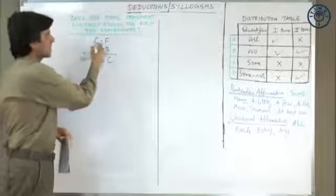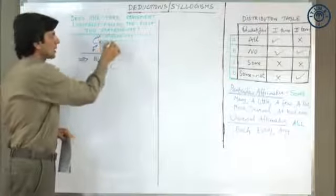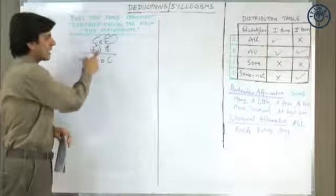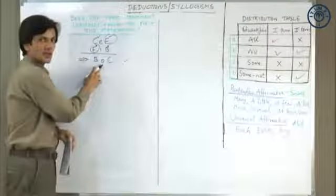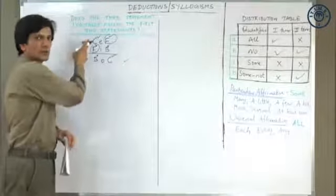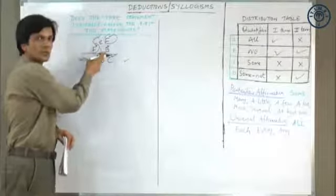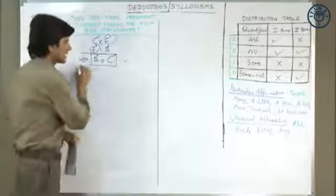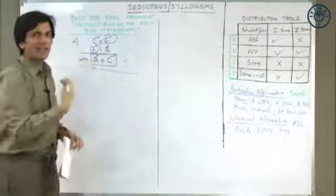This is universal negative — both are distributed. This is particular affirmative — both are not distributed. Your middle term F is distributed at least once, and since one premise is negative and the other is particular, your conclusion must be particular negative — it has to be some not. In some not, the first term is not distributed while the second term is distributed. The last rule of syllogism tells you that a term not distributed in the premises cannot be distributed in the conclusion. So ideally speaking, this is a valid inference. We can say that part A is definitely inferable.